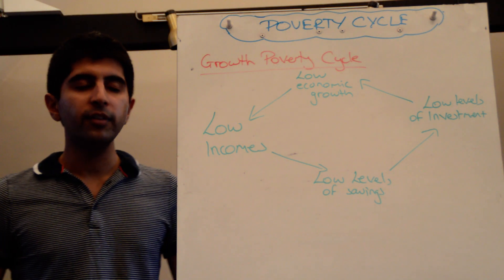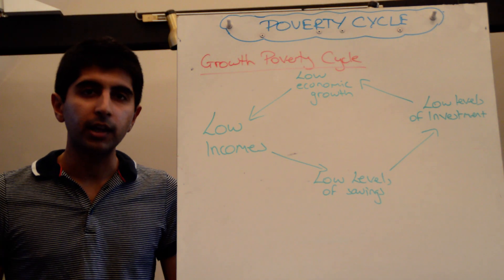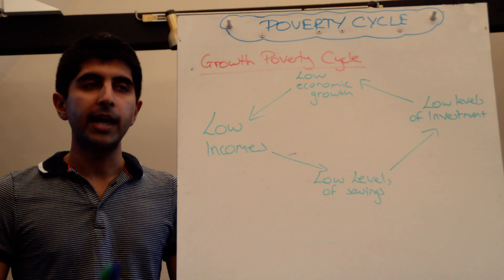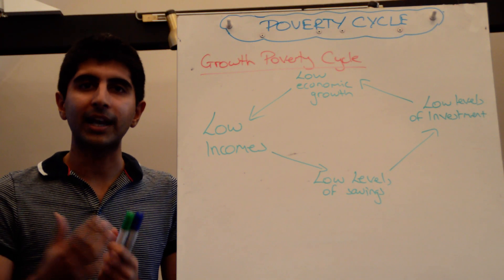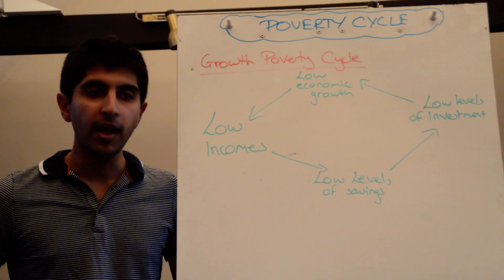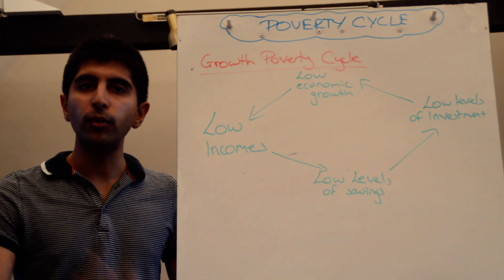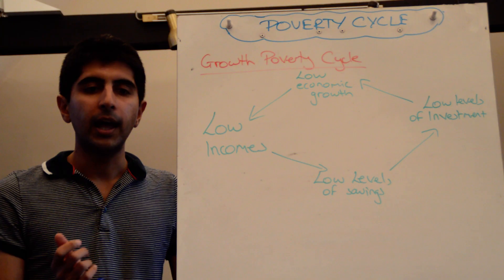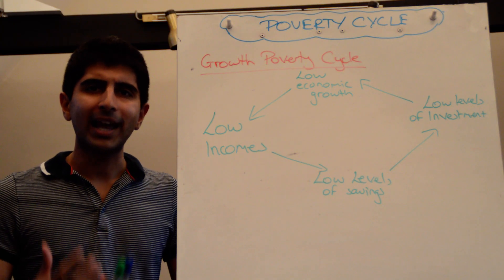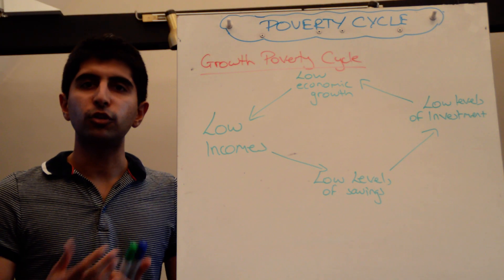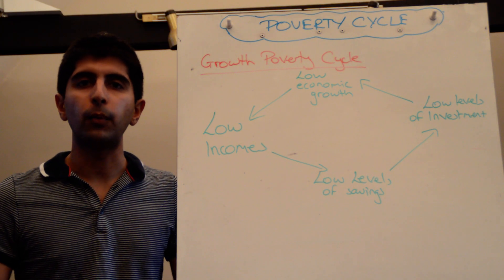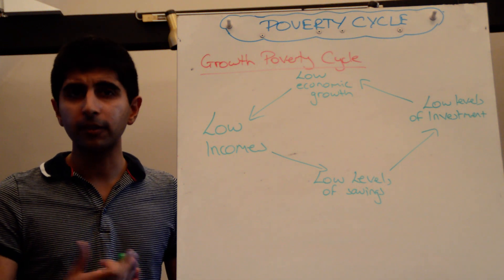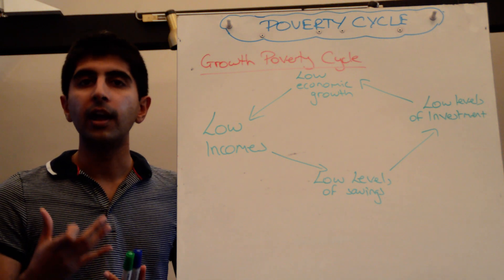Why might people be in poverty? Well, it can come down to a lack of opportunities for jobs in an economy, a lack of skills, or a lack of education. It can just be bad luck — being born into a poor household, or a household where parents are poor, where parents lack education themselves, where malnutrition is very high, where health standards are low. All these factors can lead to somebody suffering poverty.